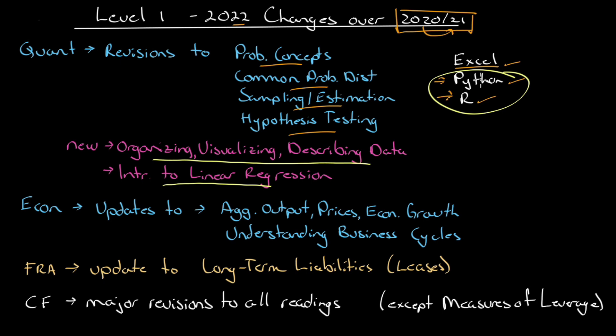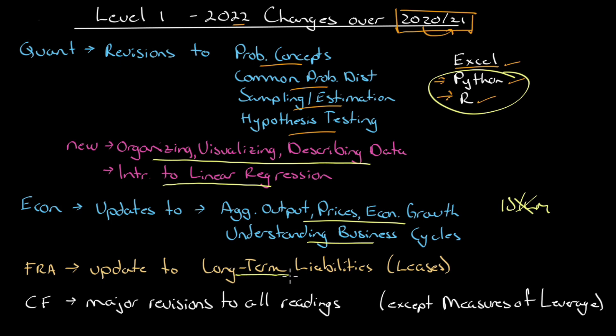In Economics, there have been updates to two readings: aggregate output, prices, and economic growth, and understanding business cycles. The entire IS-LM model derivation is now gone — only the conclusions of the IS-LM model are presented.